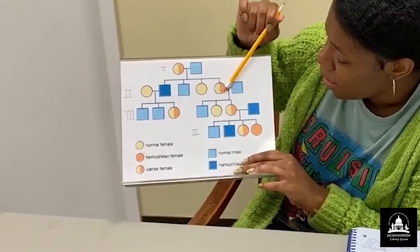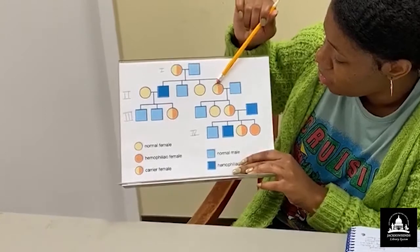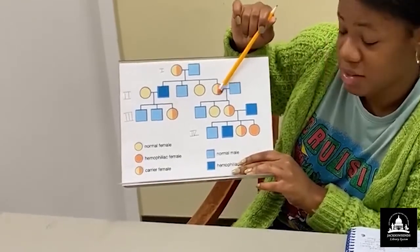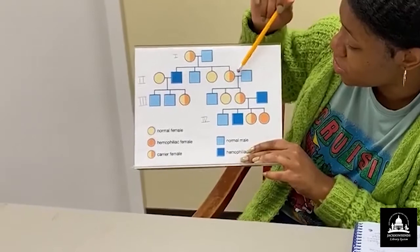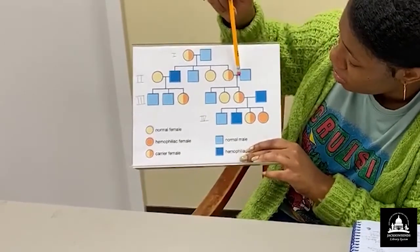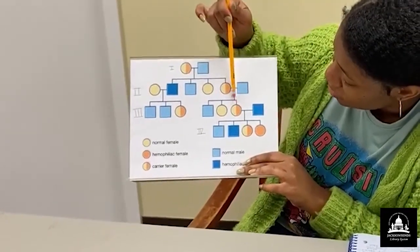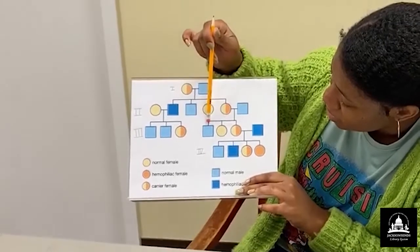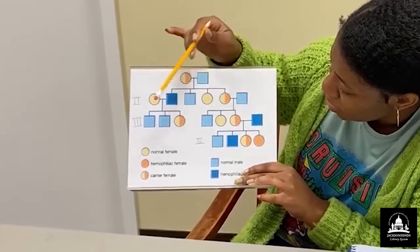And we have a daughter here. She has a horizontal line here. So that shows that she has a marriage. And we're going to follow this vertical line down to these brackets. So how many children do they have?